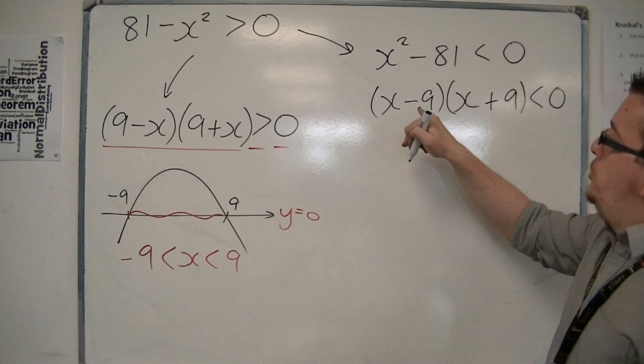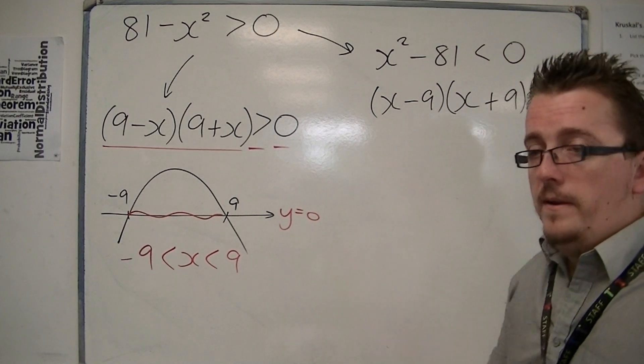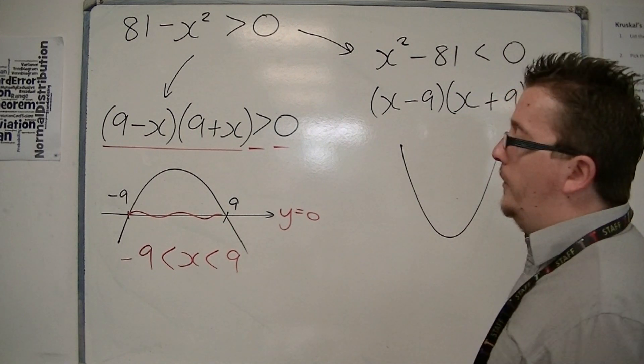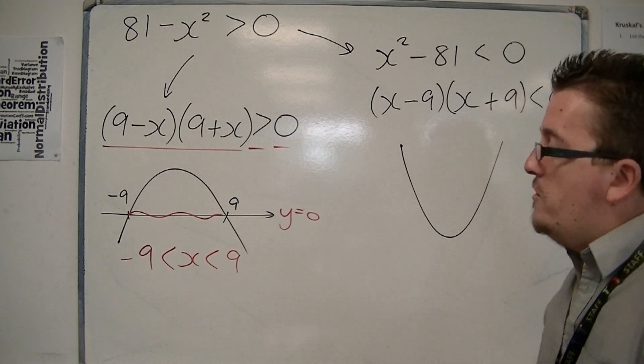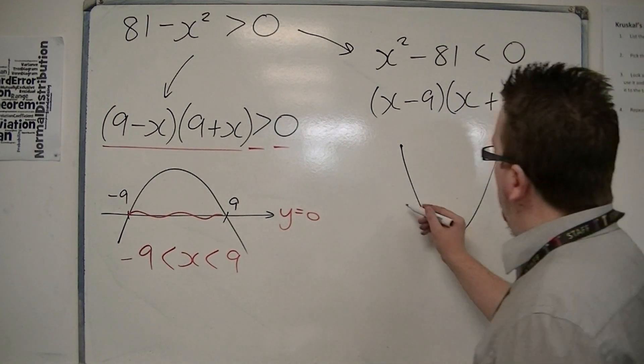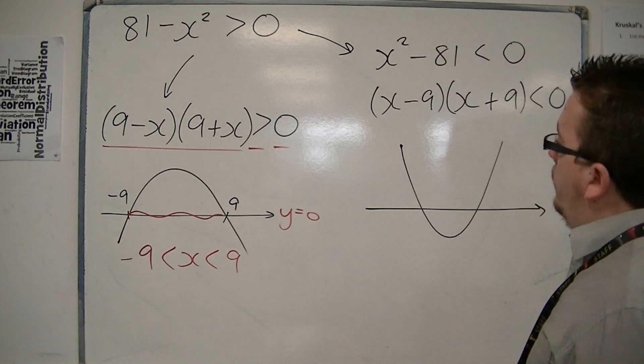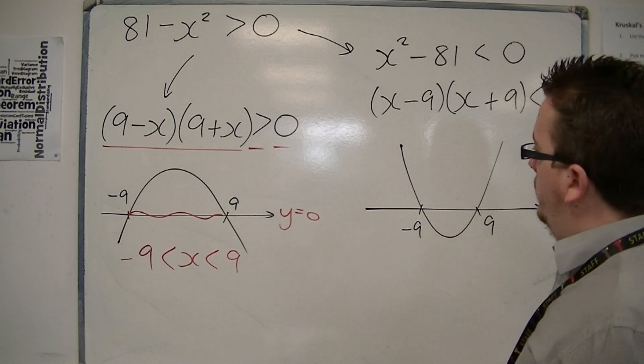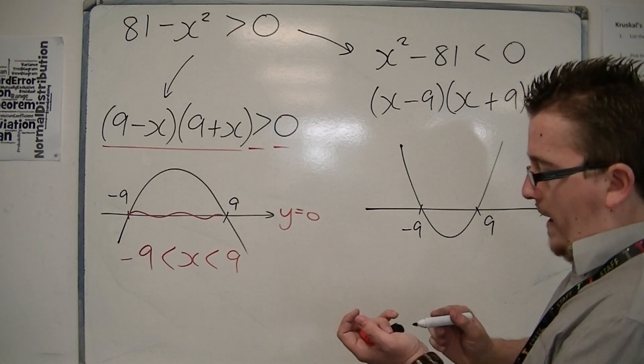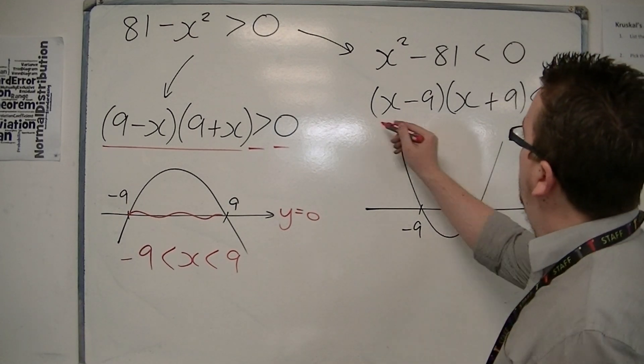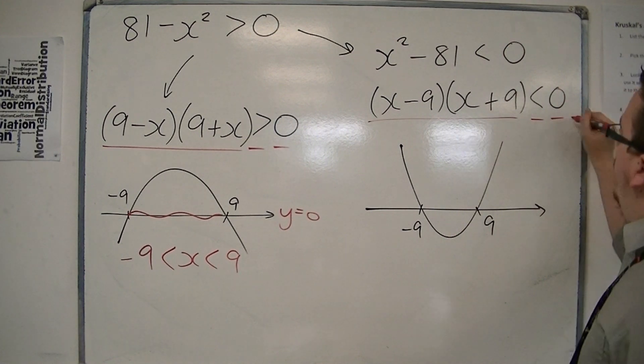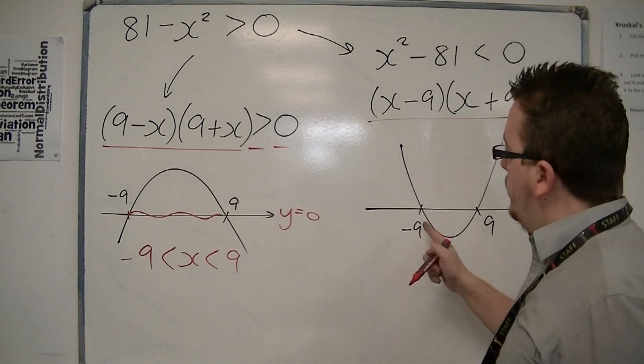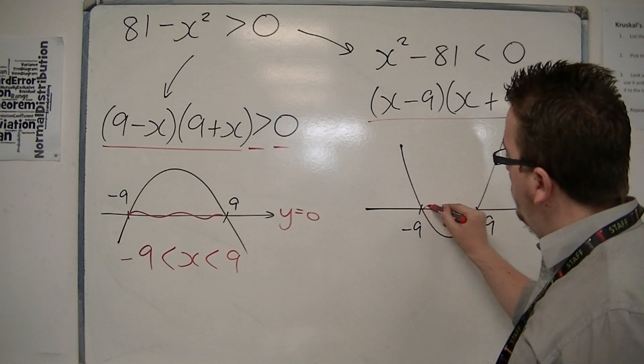So it has two solutions, minus 9 and 9, as the other one did. But in this case, the parabola is now upside down, the way around that we're used to working with. Now this crosses the x-axis at minus 9 and 9. And we're asking, where is the parabola below y equals 0? And it's below y equals 0 between minus 9 and 9.